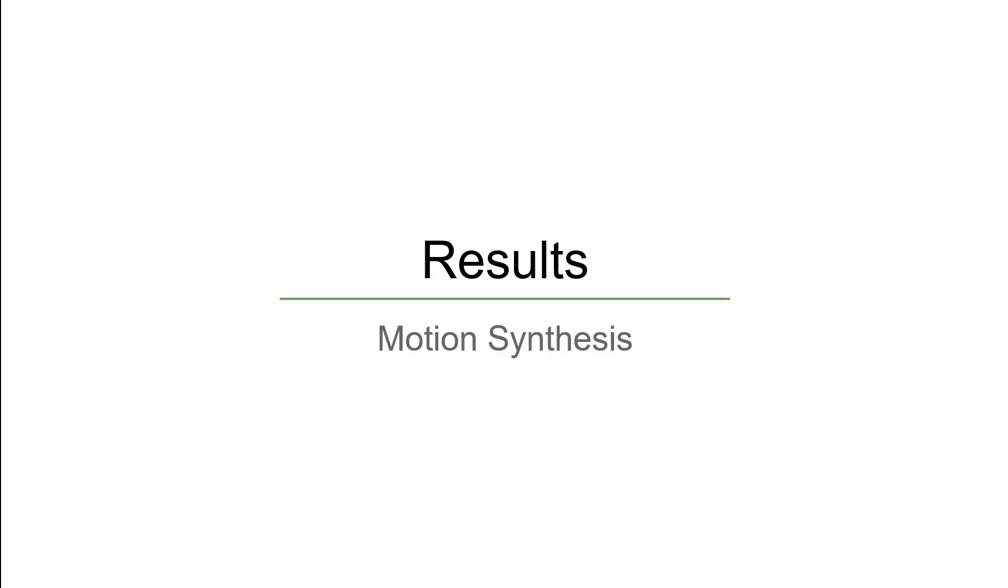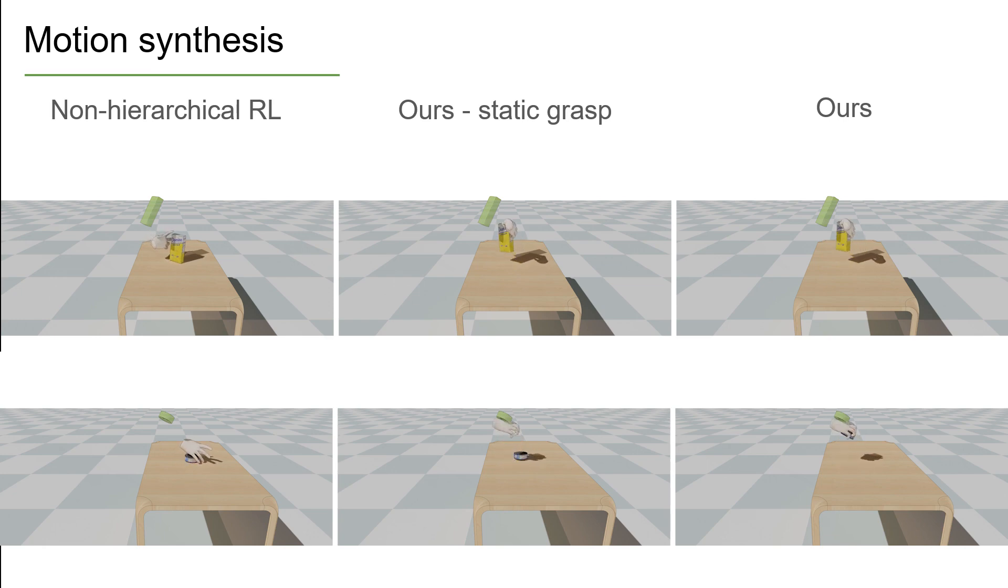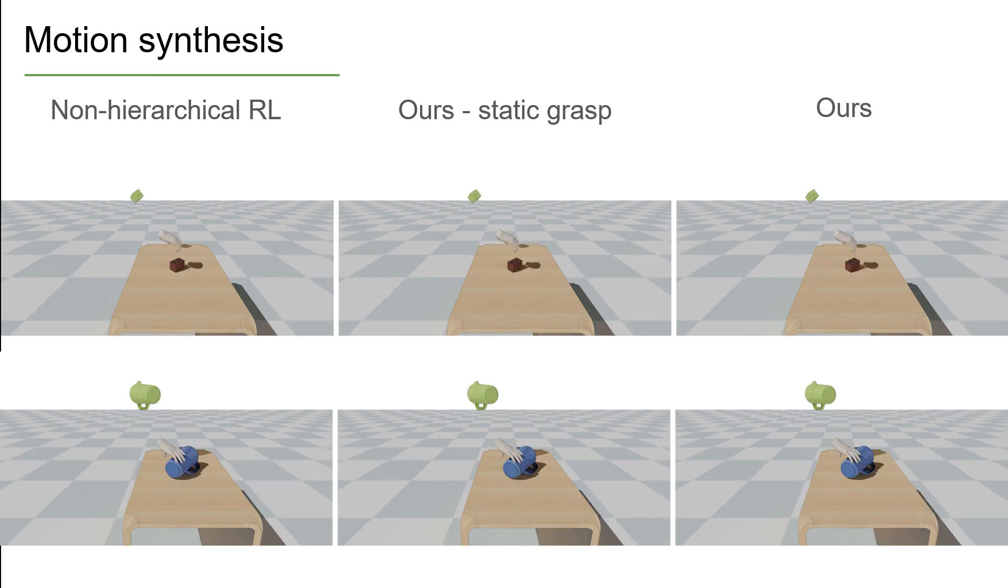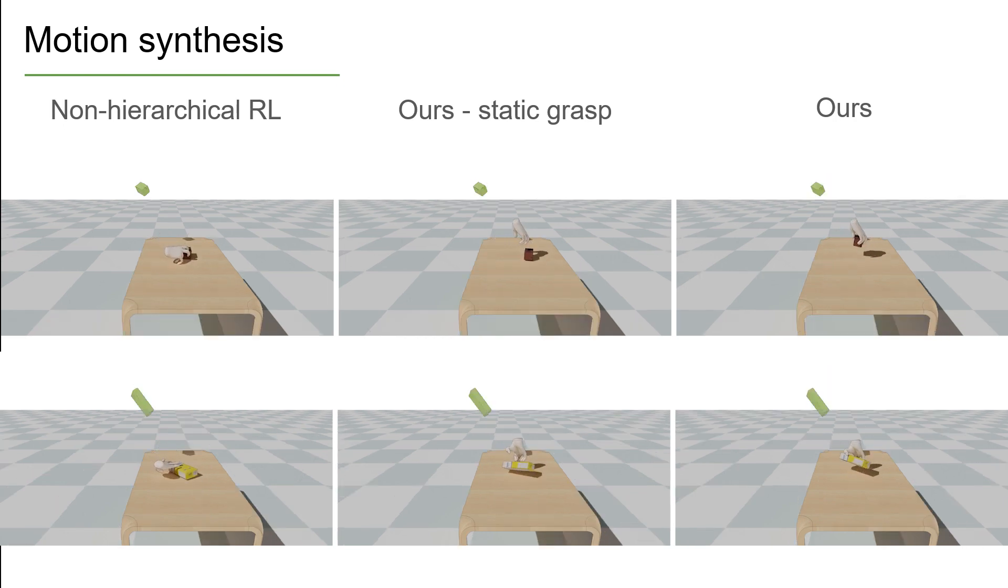We now show that our method can synthesize a wide range of motions. We compare against a standard non-hierarchical reinforcement learning approach. This method tries to achieve the dynamic grasp synthesis task end-to-end. We also evaluate a variant where a static grasp is maintained but not actively controlled during the motion. Both of these baselines cannot learn the task successfully.